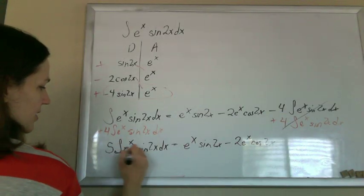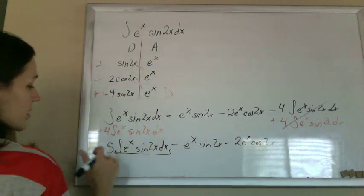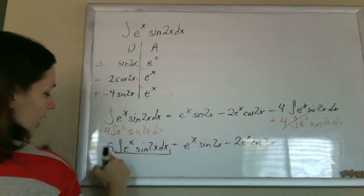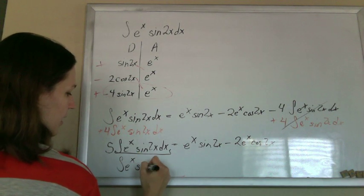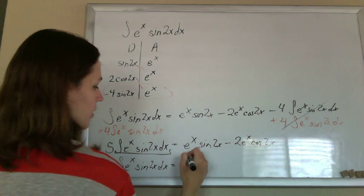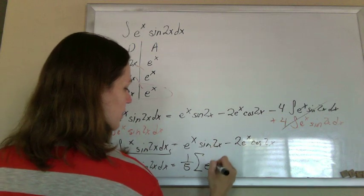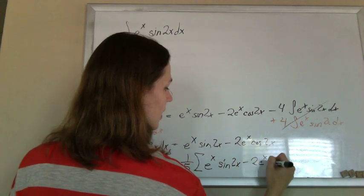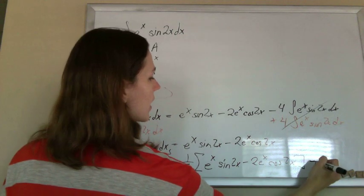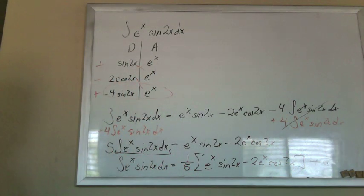The only thing left to do to solve for this integral, that's what we want, is to divide by five. So my final answer is the integral e to the x sine 2x dx equals one-fifth this mess: e to the x sine 2x minus 2e to the x cosine 2x plus c, and it's done.